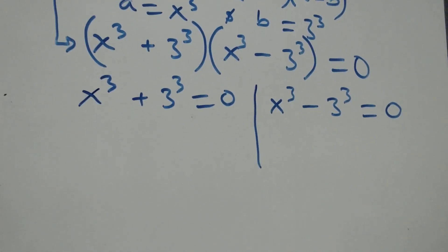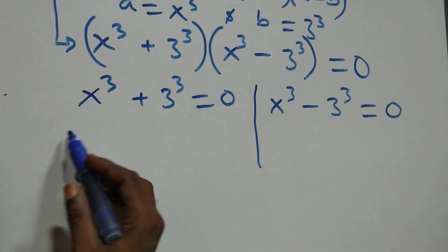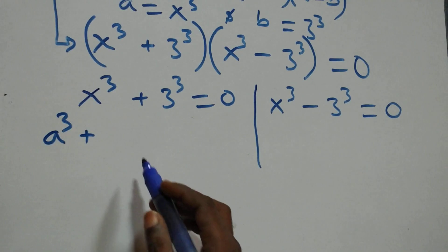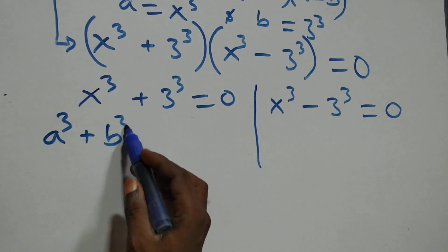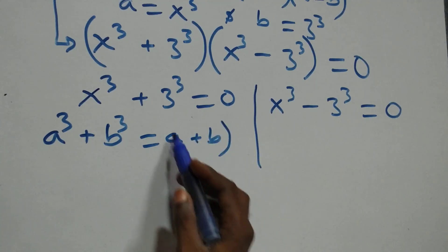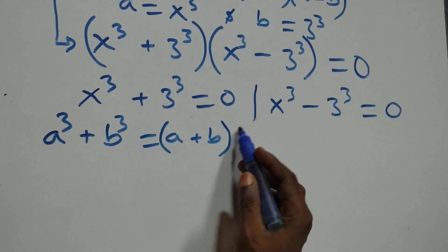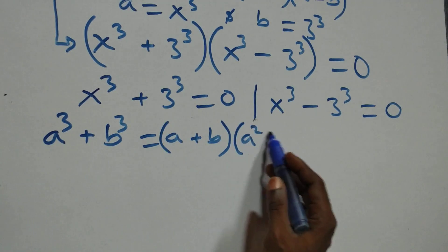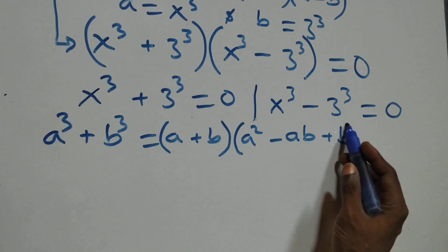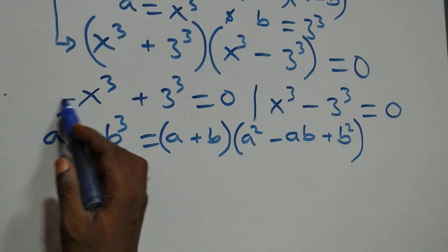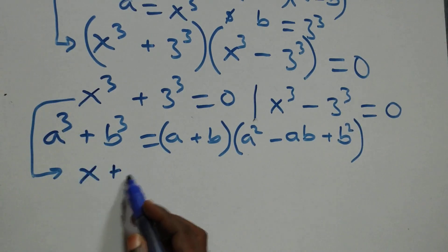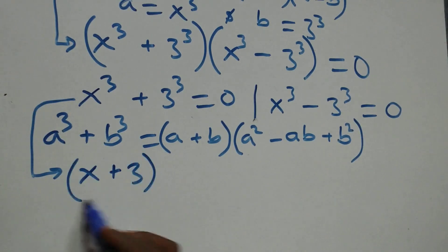Solving from the first case, this follows the sum of cubes identity: a³ + b³ is the same as (a + b)(a² − ab + b²). Here this becomes (x + 3) times open bracket x squared minus 3x plus 3 squared.